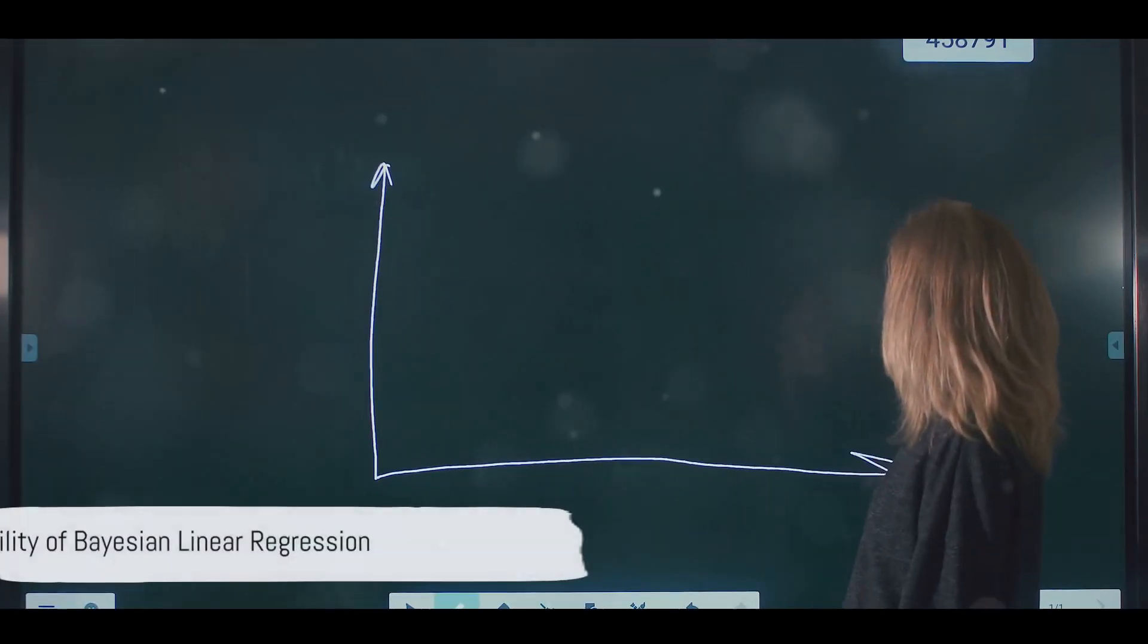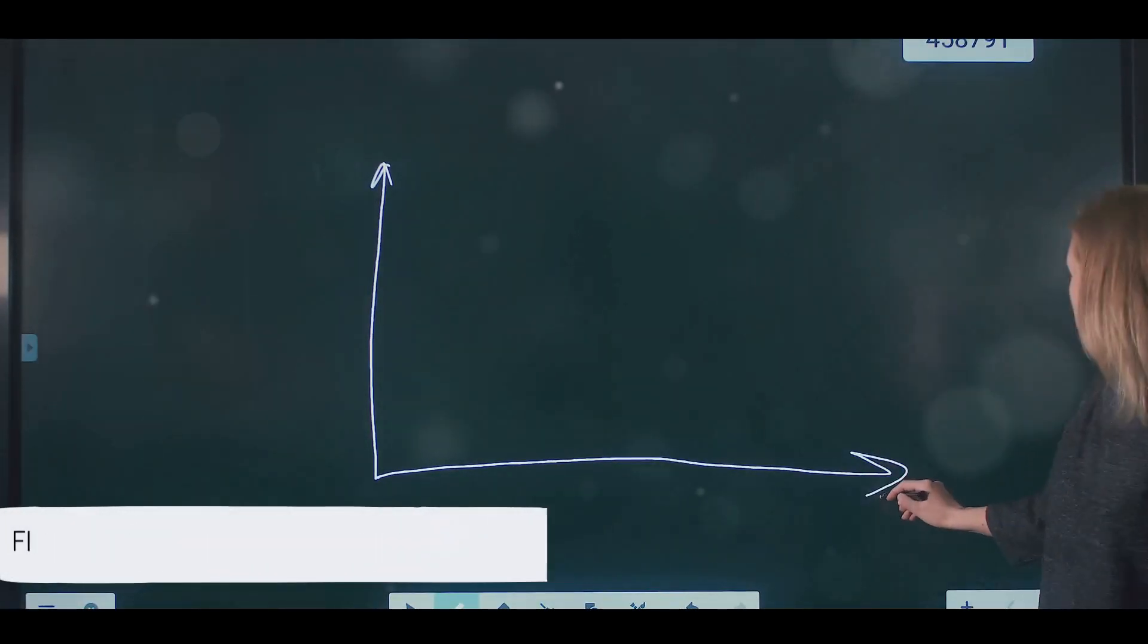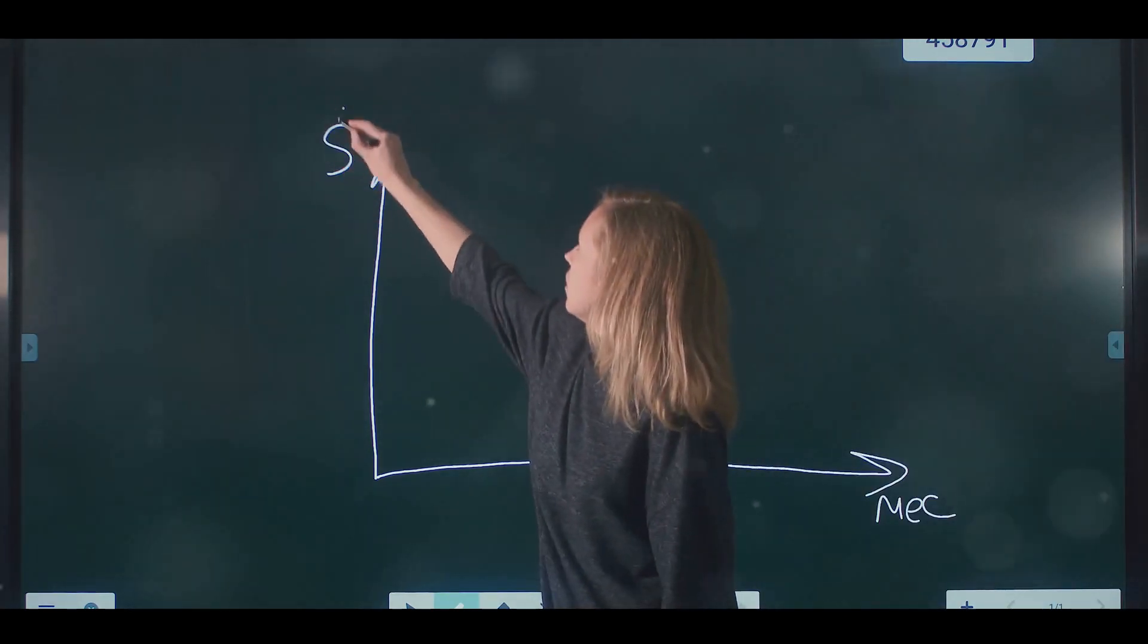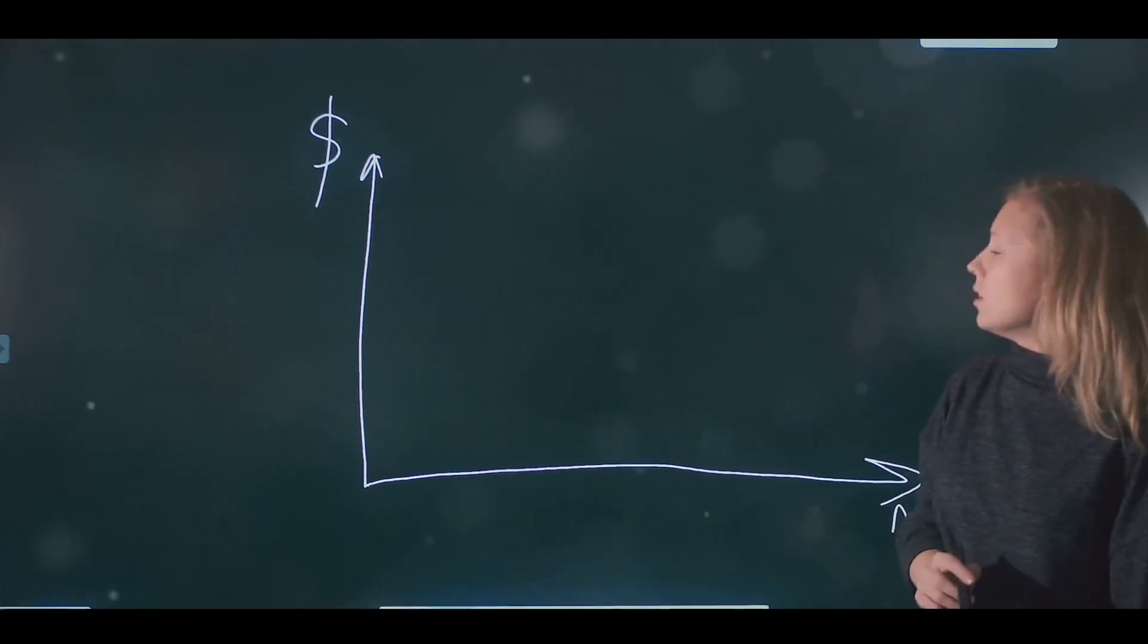The beauty of Bayesian linear regression lies in its flexibility. With each new piece of data, the model updates its beliefs about the parameters, allowing it to adapt and improve over time.